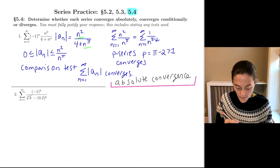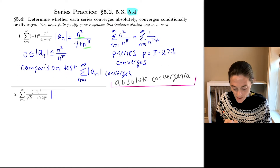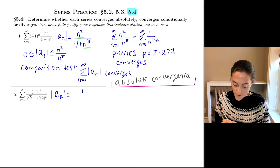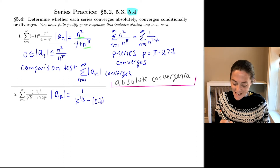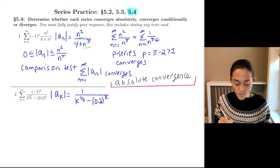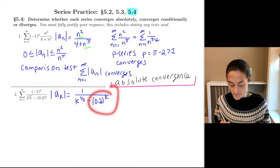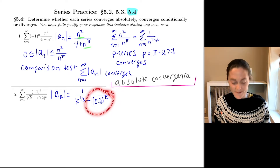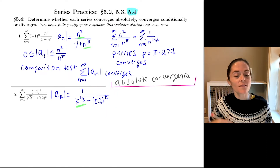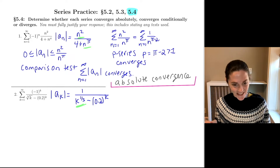For number two, I start with the same approach: I want to look at the absolute value of a_k. Here I have one divided by k to the one-third minus 0.2 raised to the k-th power. Once again, what's happening? Well, the terms are going to zero. The 0.2 to the k part in the denominator goes to zero. What dominates the denominator is k to the one-third growing without bound, so one over that will go to zero.